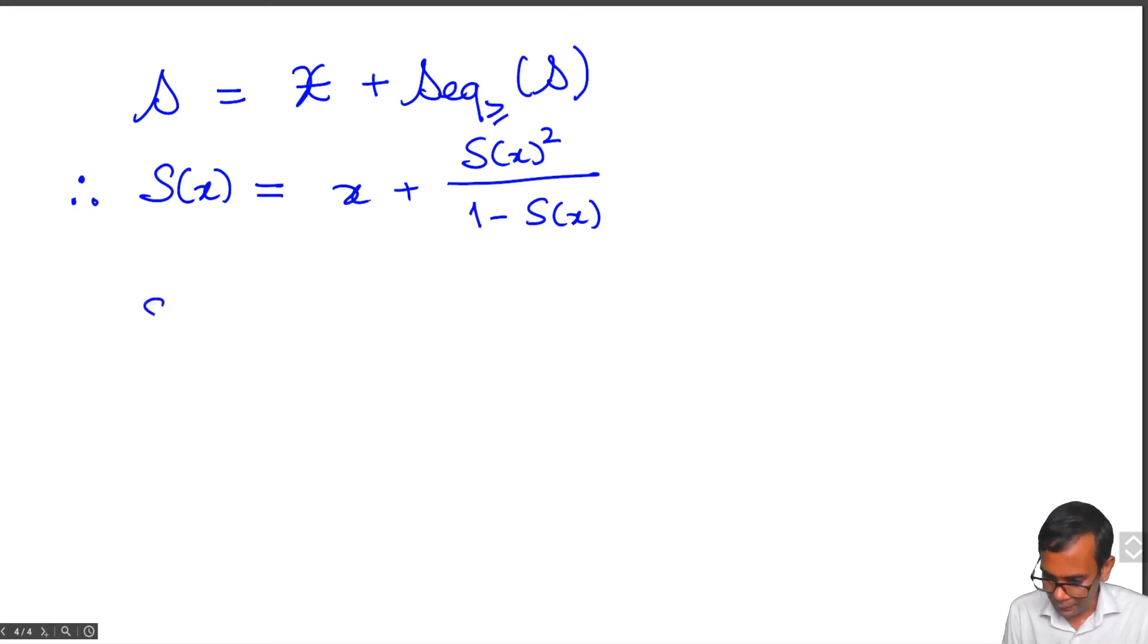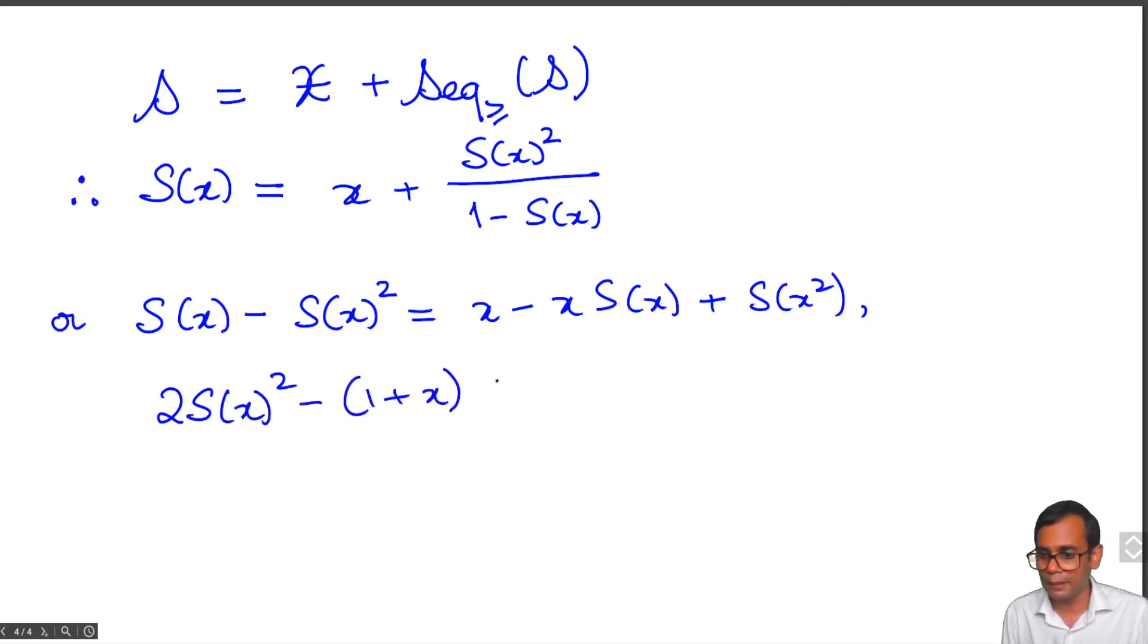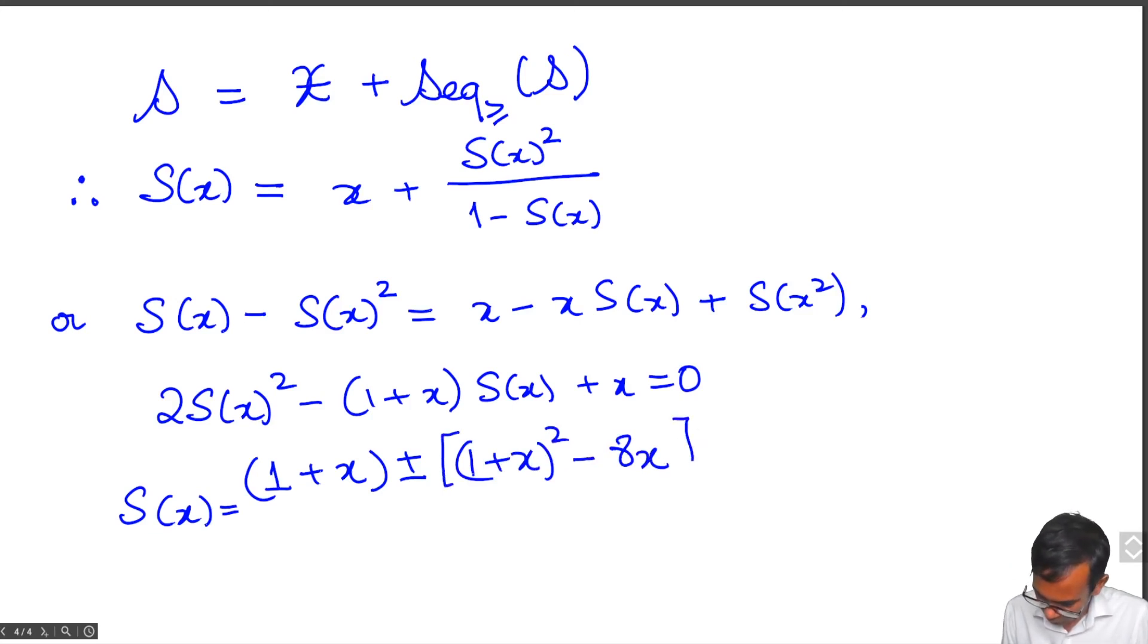I can write this as S(x) - S(x)^2 = x - xS(x) + S(x)^2, which is the standard form of a quadratic equation: 2S(x)^2 - (1+x)S(x) + x = 0. Solving this quadratic equation you get S(x) = (1+x ± √[(1+x)^2 - 8x])/4.